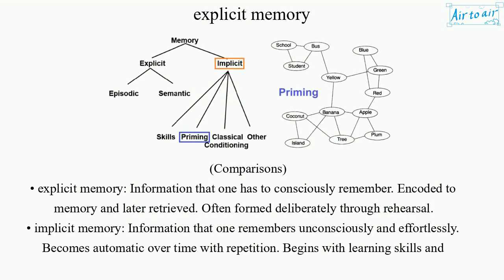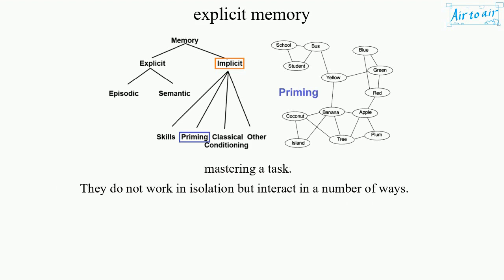Comparing explicit and implicit memory: explicit memory is information that one has to consciously remember — it is encoded to memory and later retrieved, and is often formed deliberately through rehearsal. Implicit memory, by contrast, is information that one remembers unconsciously and effortlessly, becomes automatic over time with repetition, and begins with learning skills and mastering a task. They do not work in isolation but interact in a number of ways.